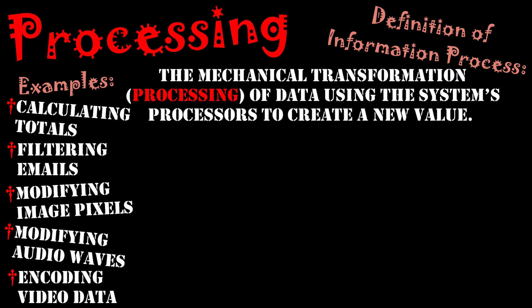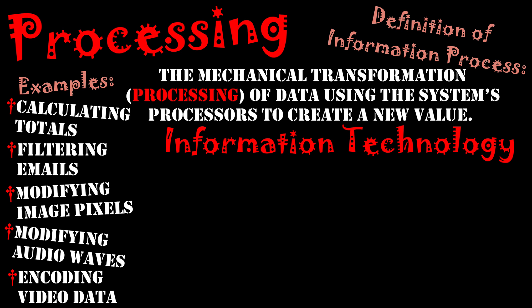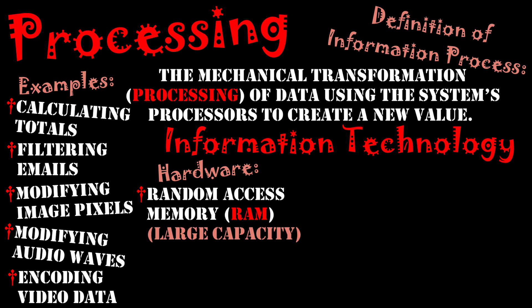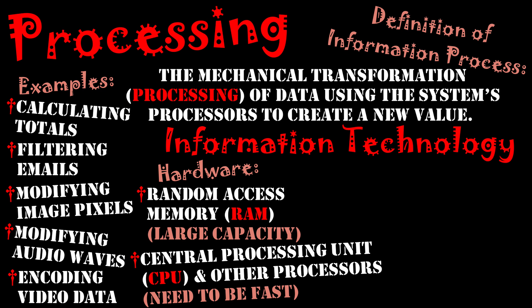As you can see, processes take place all the time. I've tried to highlight in the examples all the different media types and how they can actually be processed. Now, on the hardware side, we're highlighting two specific pieces of hardware that work together: the first is random access memory, and the second is the central processing unit.